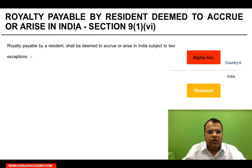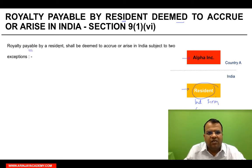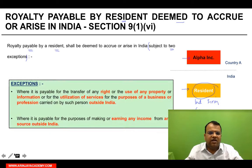Second — royalty payable by a resident deemed to accrue or arise in India. If an Indian tax resident is paying royalty to a non-resident — the resident could be an individual, a firm, a company, it doesn't matter — as long as it is a resident paying royalty to a non-resident, generally royalty payable by the resident shall be deemed to accrue or arise in India. But there are two exceptions. In these two situations, the royalty will not be deemed to accrue or arise in India.